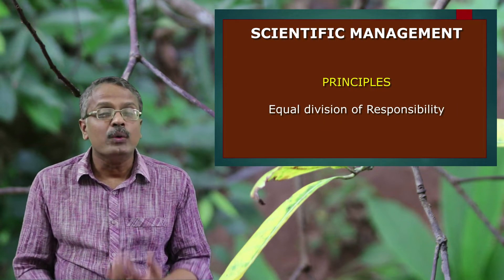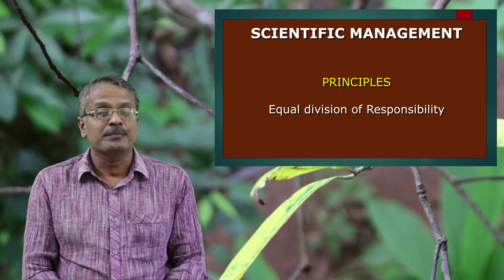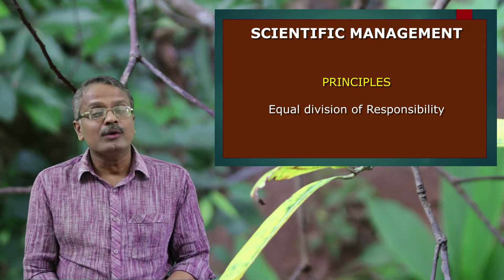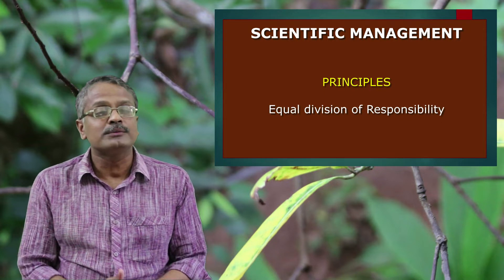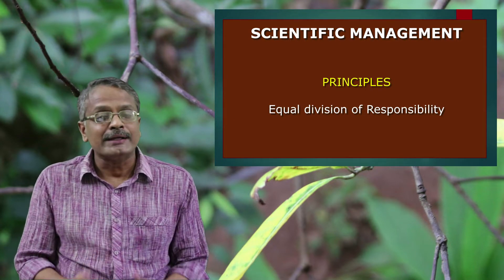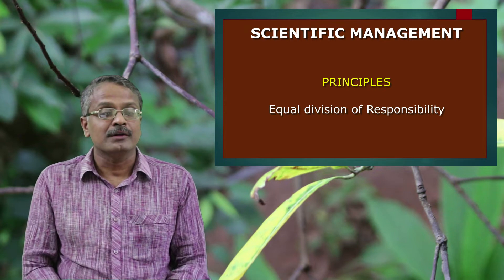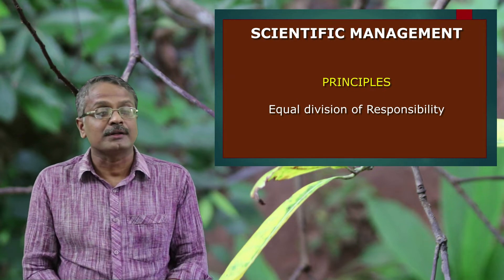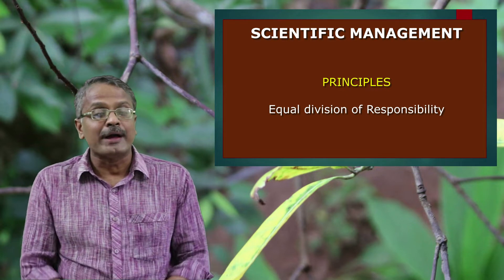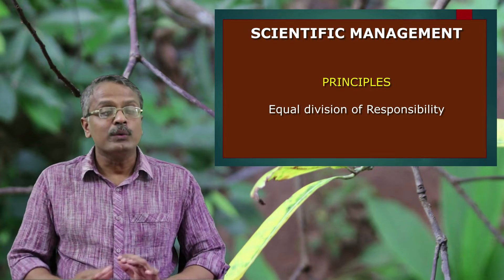The next principle is equal division of responsibility. At that time, there was a practice of blaming workers for every defect. Taylor had a different opinion — he wanted to distribute responsibility among management and employees equally. Management should be responsible for planning and organizing the work, whereas workers should be responsible for doing the work. Thus, he divided the work into two: planning and doing. The responsibility of planning was assigned to management and the responsibility of doing was assigned to workers.